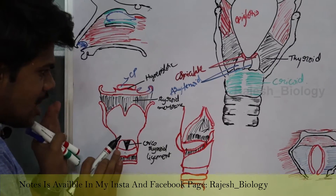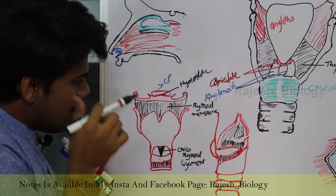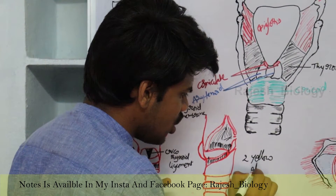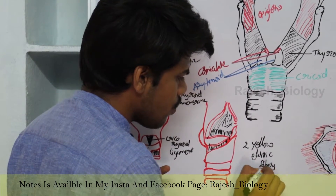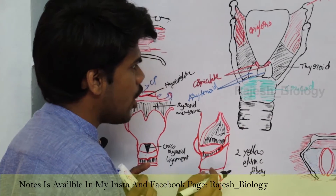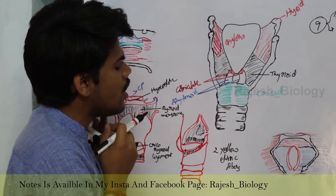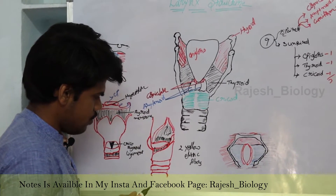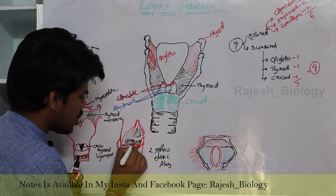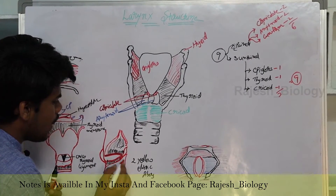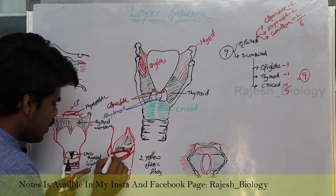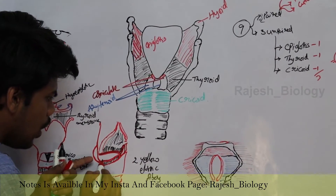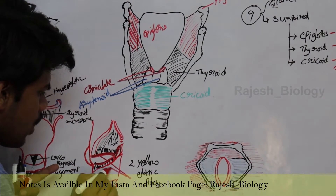Now, coming to the detailed structure of the larynx from upper view and side view. There are two yellow elastic fibers which are present between the thyroid and arytenoid cartilages. In between the arytenoid and thyroid, these two yellow elastic fibers are drawn here in red color. These yellow elastic fibers are known as vocal cords.